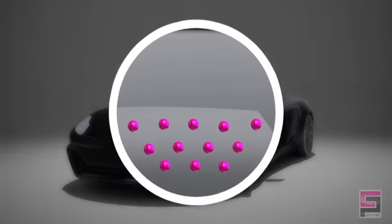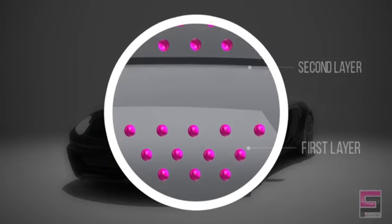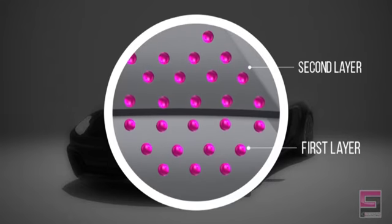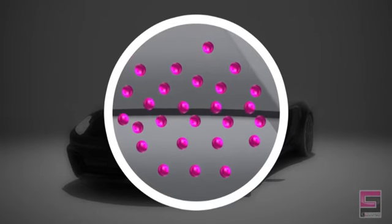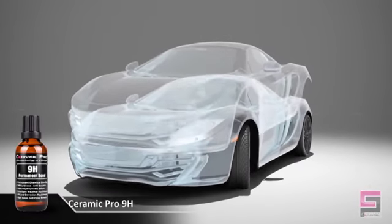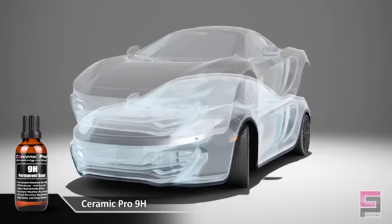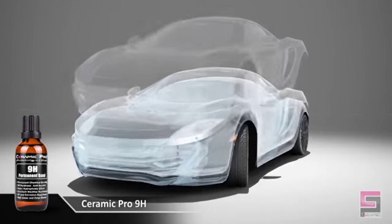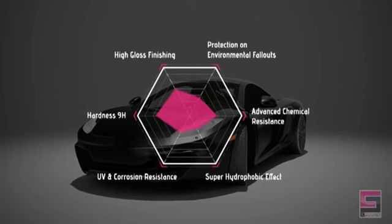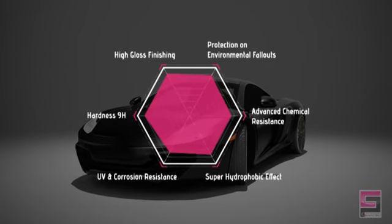The first and second layers of Ceramic Pro 9H will be perfectly bonded with the clear coat and paint systems. It serves as a solid foundation for additional layers of ceramic coating being applied later on. With each additional layer of Ceramic Pro 9H, the multiplication effect leads to higher gloss finish and color renewal, super hydrophobic effect, scratch resistance, advanced chemical resistance, UV resistance, thermal resistance, and anti-graffiti.